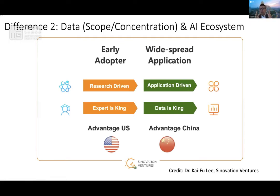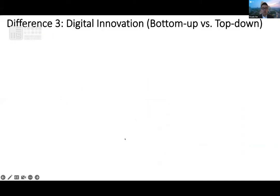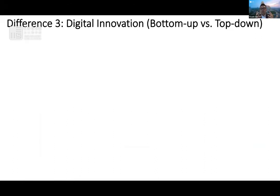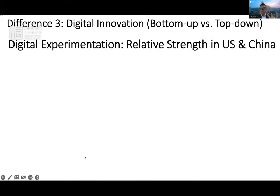This leads to a very interesting difference. If you think about companies like TikTok, they initially grew based on data collected on Chinese consumers, and the AI model was trained and the hyperparameters were tuned. Such a model then became full-fledged and could be used in their global expansion. This touches on the scope, concentration, and AI development aspects. Now I want to reach the final difference, which I call the digital innovation mode. I would say the US is more based on a data-driven bottom-up innovation mode — I'm talking about the private sector — and Chinese companies are more based on a strategy-driven top-down innovation mode.